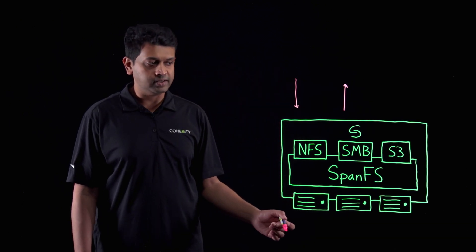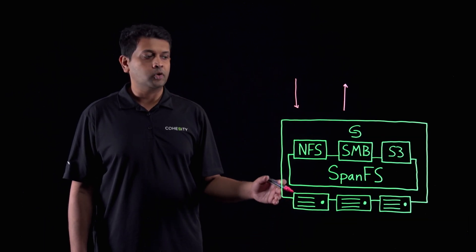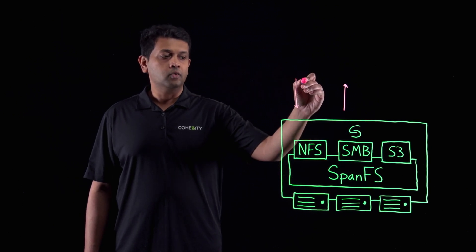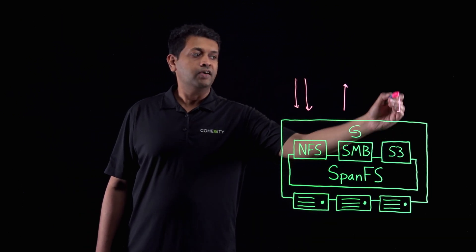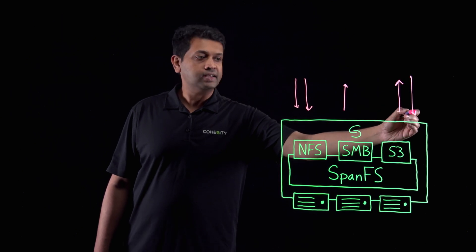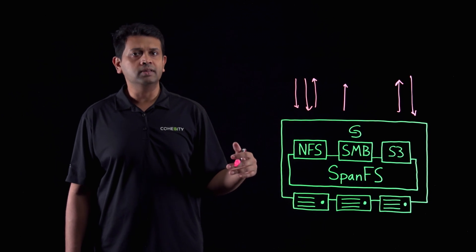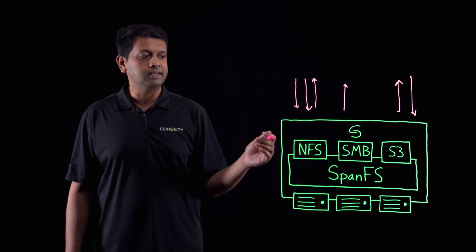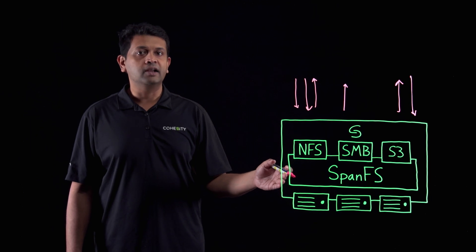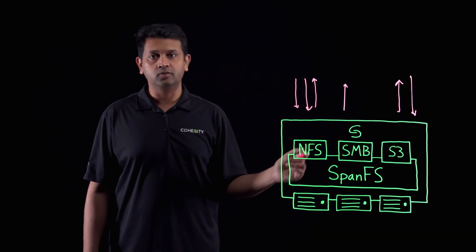But we go one step further. We also provide multi-protocol access between NFS or SMB and S3. So you can write via NFS and read via S3. Similarly, you can write data via S3 and read data via NFS or SMB. This opens up new possibilities such that you can dump log files via NFS and you can run a Spark job on it which can access the data via S3.